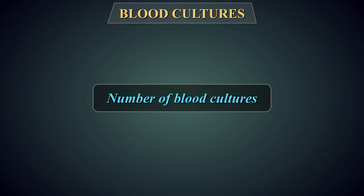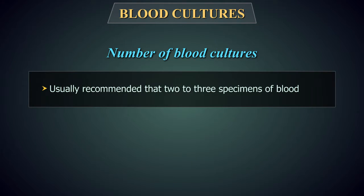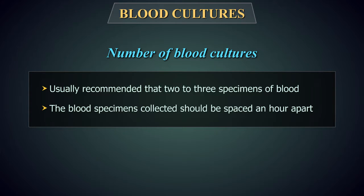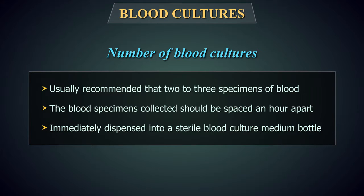Number of Blood Cultures: Because microorganisms might be present in the blood continuously in some diseases and intermittently in others, to increase the chances of isolating a pathogen, it is usually recommended that at least 2-3 specimens of blood collected at different times should be cultured. The blood specimens collected should be spaced an hour apart from separate venipuncture sites using separate needles and syringes.